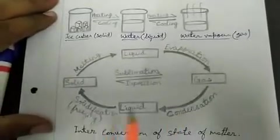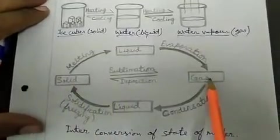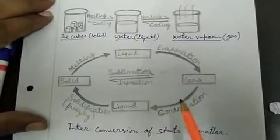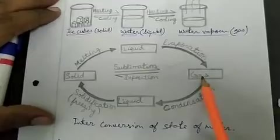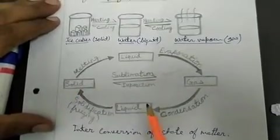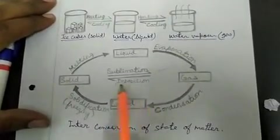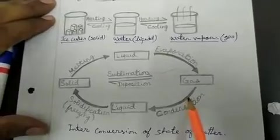Similarly, on cooling, reverse process can occur, which is a good example in the case of water cycle in the nature. Solid can directly change to gaseous state also. The process is called sublimation, as we can see in the case of camphor as well as naphthalene balls. Similarly, gases can be changed to solid—the process is called deposition, as you can see in the dry ice.